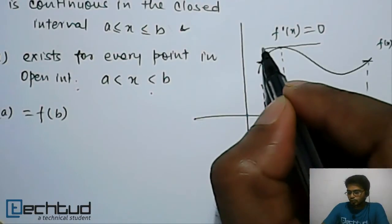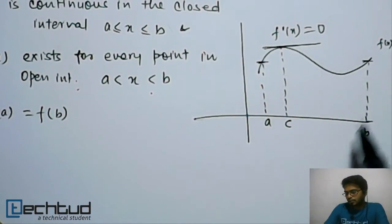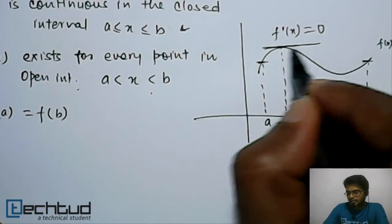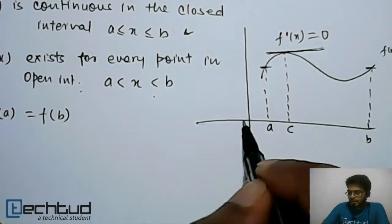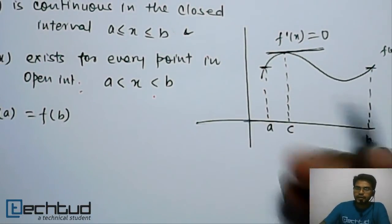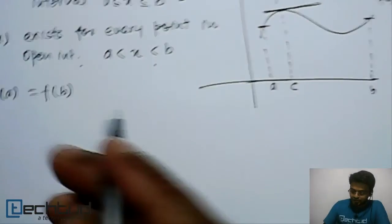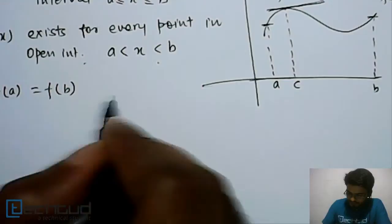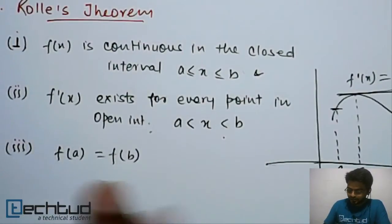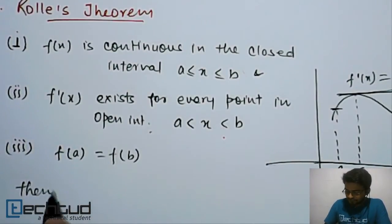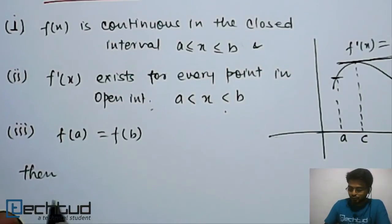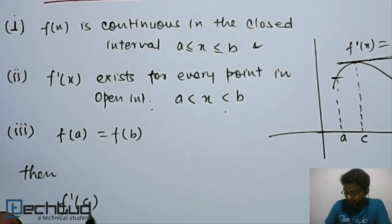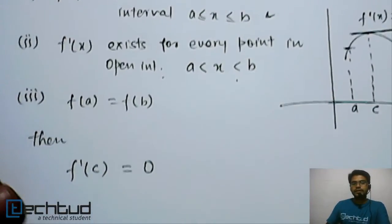That means there will be at least one point where the slope of the tangent will be equal to zero — that is, the tangent will be parallel to the x-axis. So geometrically, if all three conditions are satisfied, there will be at least one point c where f'(c) is equal to zero.